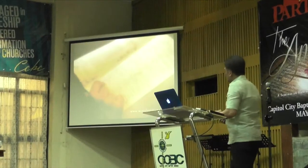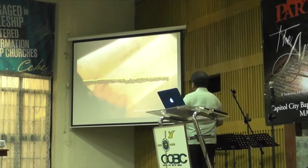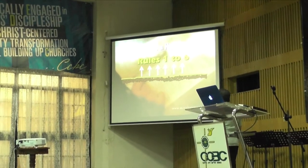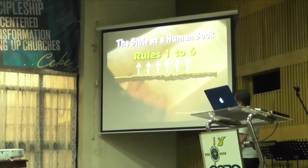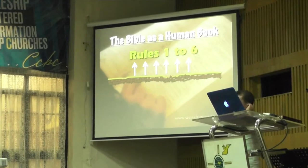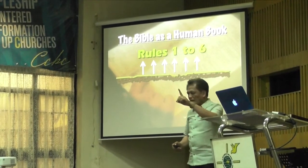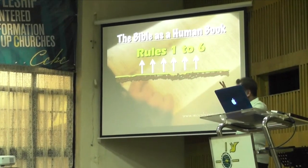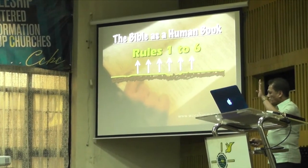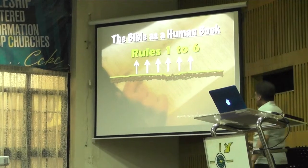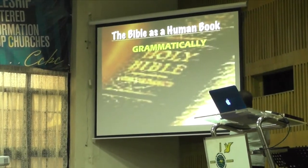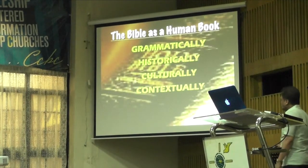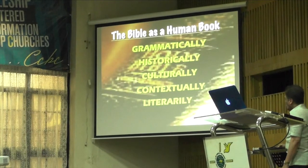What we have here, if we consider ground level, we have the first six rules — the Bible as a human book. Without your notes, tell me what the first six rules are: understand it grammatically, historically, culturally, contextually, literarily, and logically. We have that covered already.